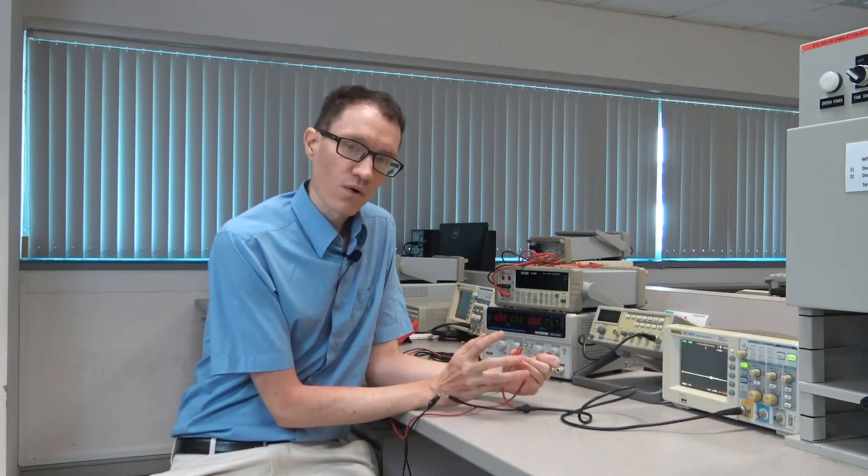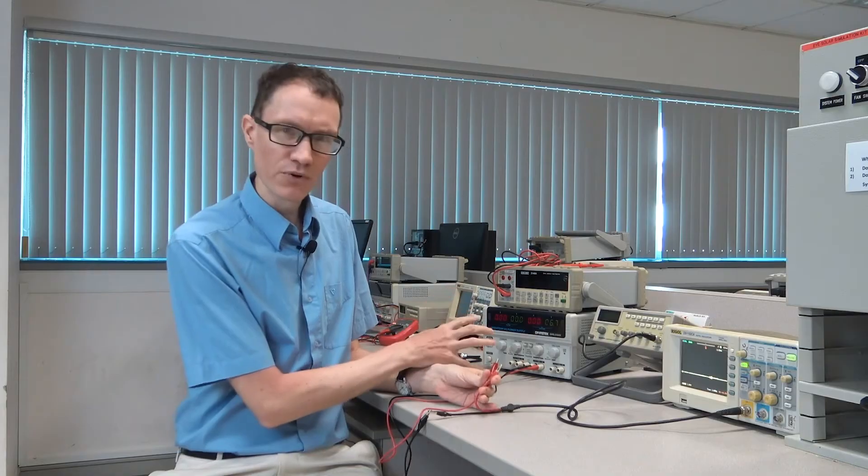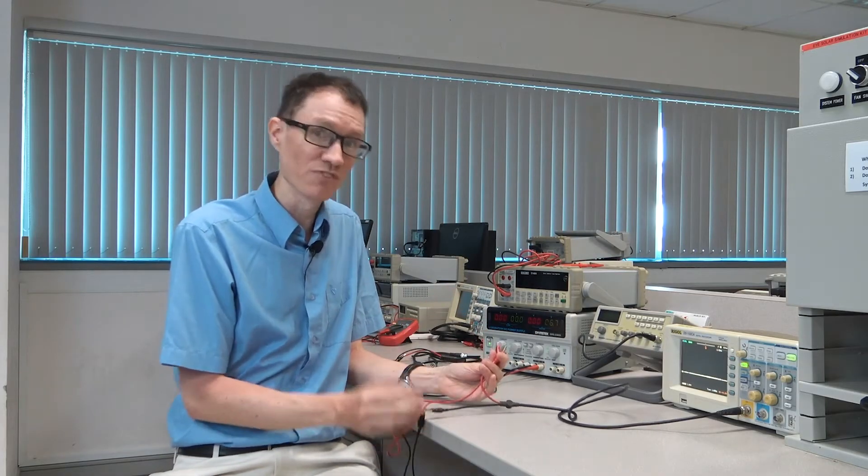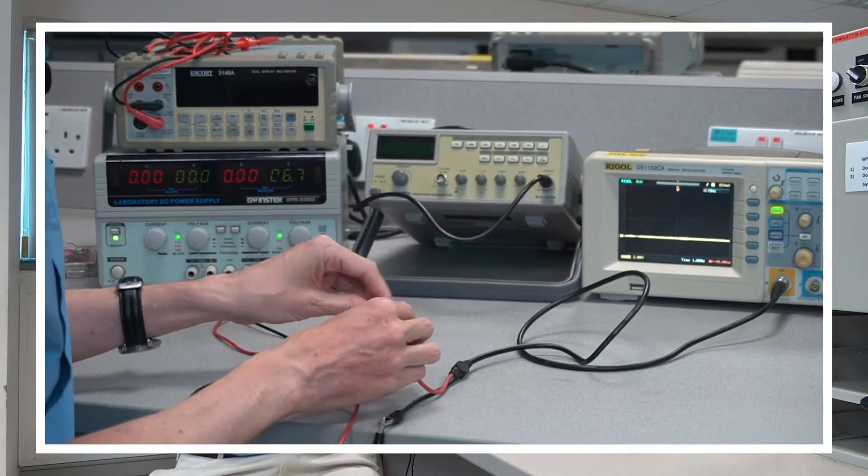It is worth pointing out that quite often the oscilloscope black is grounded. So if you have a floating power supply, then sometimes hooking something up to the black on the oscilloscope will effectively connect it to the Earth. So you have to be careful sometimes if you're not expecting that.